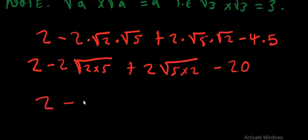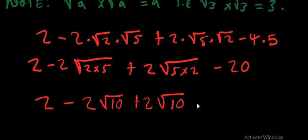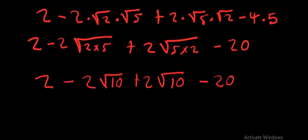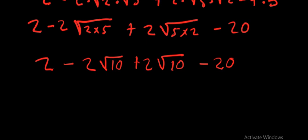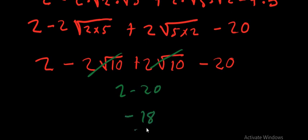We have 2 − 2√10 + 2√10 − 20. The like terms are the constants and the √10 terms. The −2√10 and +2√10 cancel each other. So we are left with 2 − 20 = −18. The answer is −18.